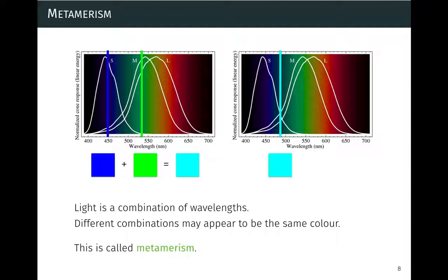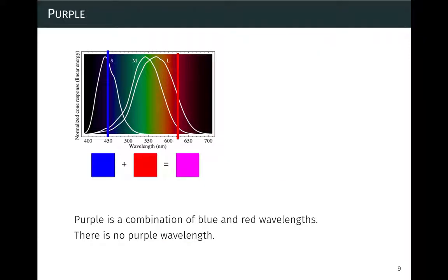This phenomenon is called metamerism, and it's quite important. As a side note, there is no such thing as a real wavelength for purple. When you see purple in a rainbow, it's not a real wavelength — it's a mixture of blue and red. The shortest wavelengths are blue, and what we call indigo is just blue. Purple is a mix of blue and red that your brain associates with that color, making it special — you cannot find it in the real world as a pure wavelength.